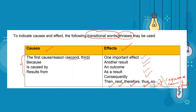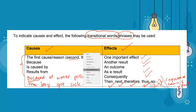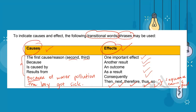Here is an example sentence using cause and effect words: 'Because of water pollution, the boy got sick.' Notice how we use the word 'because' here. If you have a pen and paper right now, it would help if you pause this video and copy all the phrases under causes and all the phrases or words under effects. If you need more time, pause. If not, let's proceed.